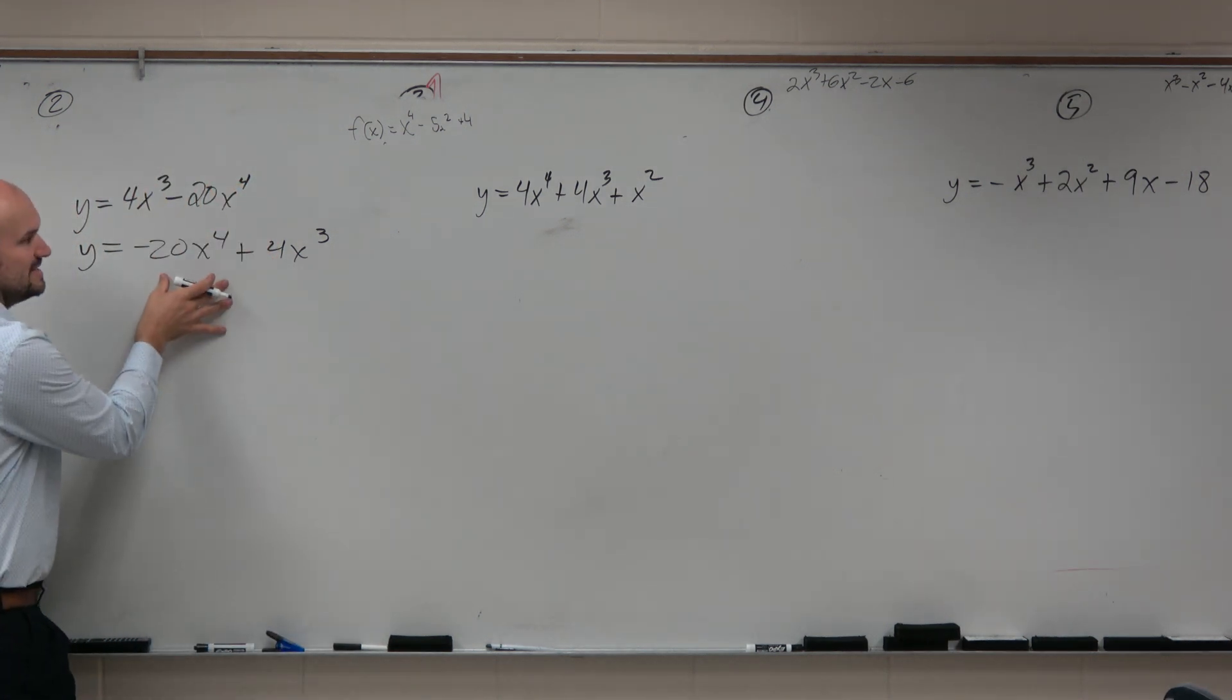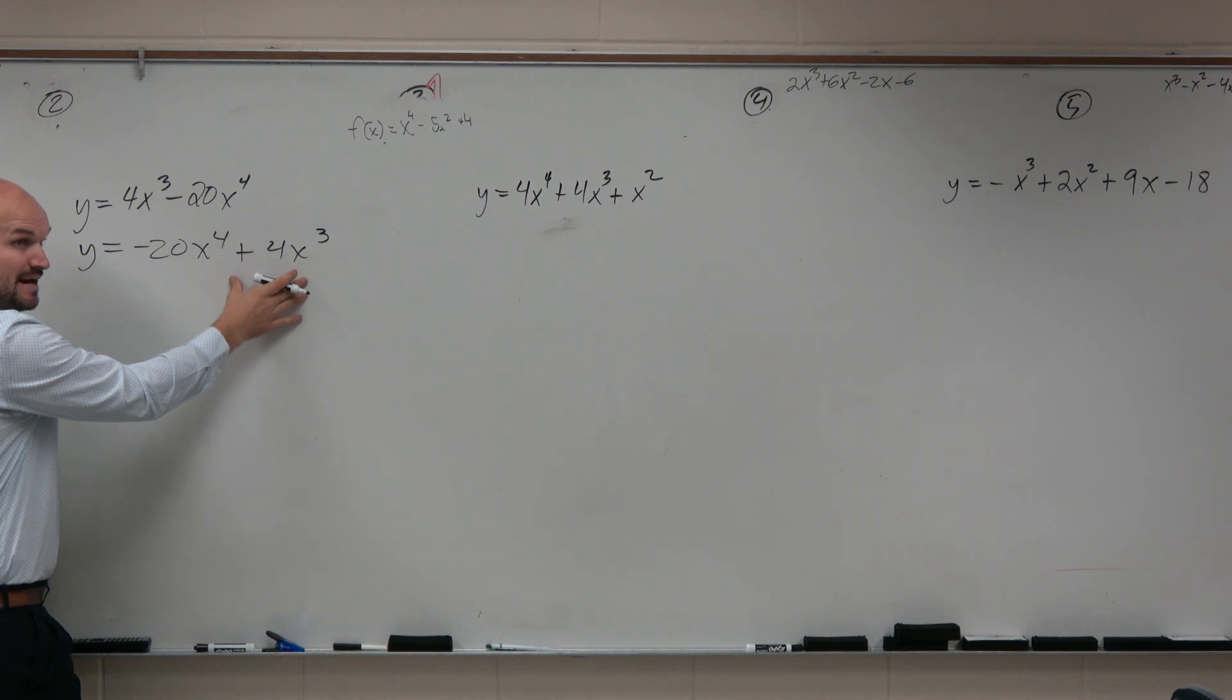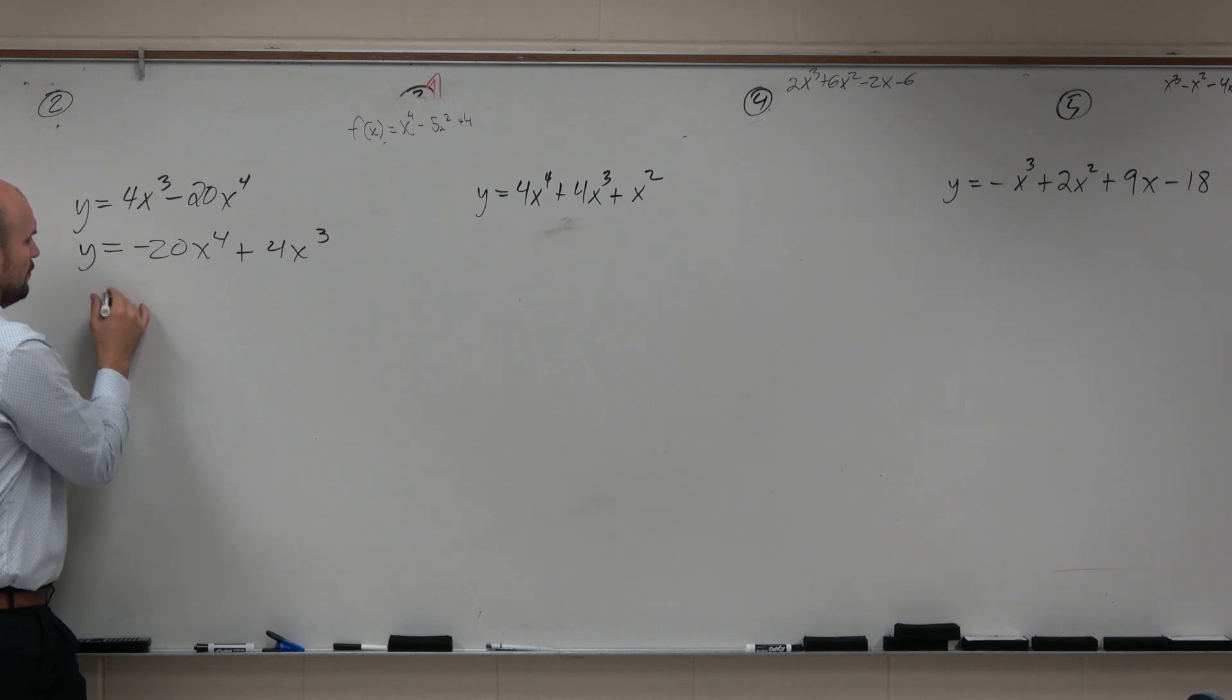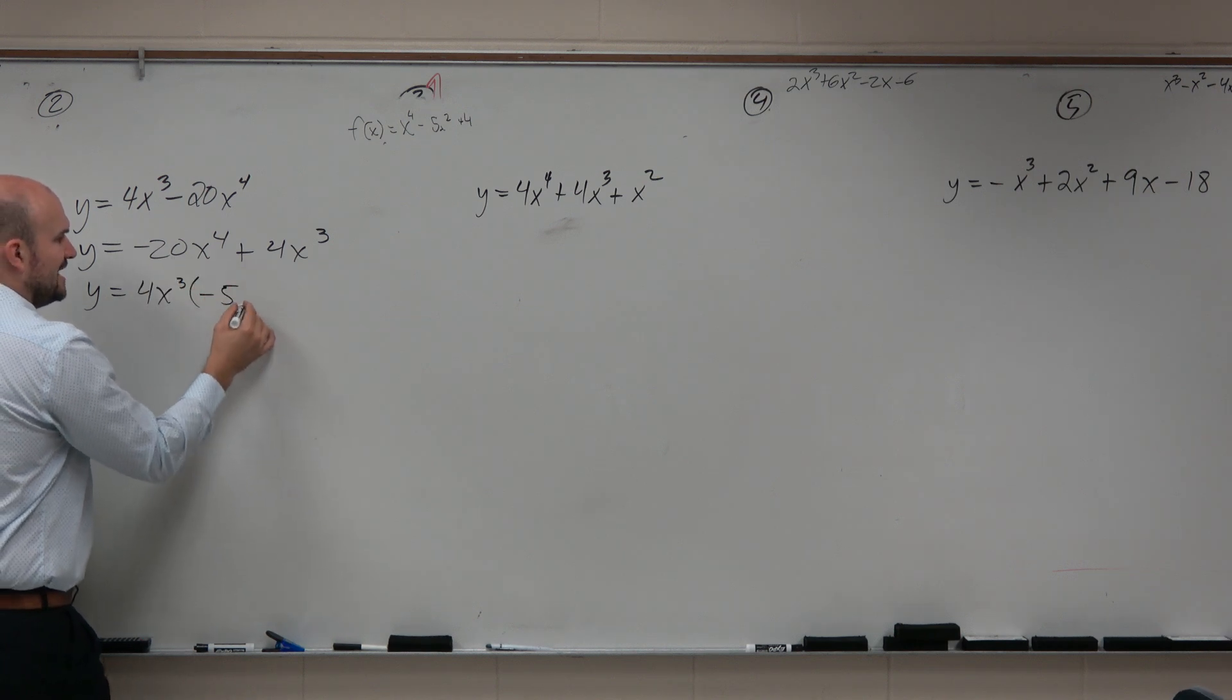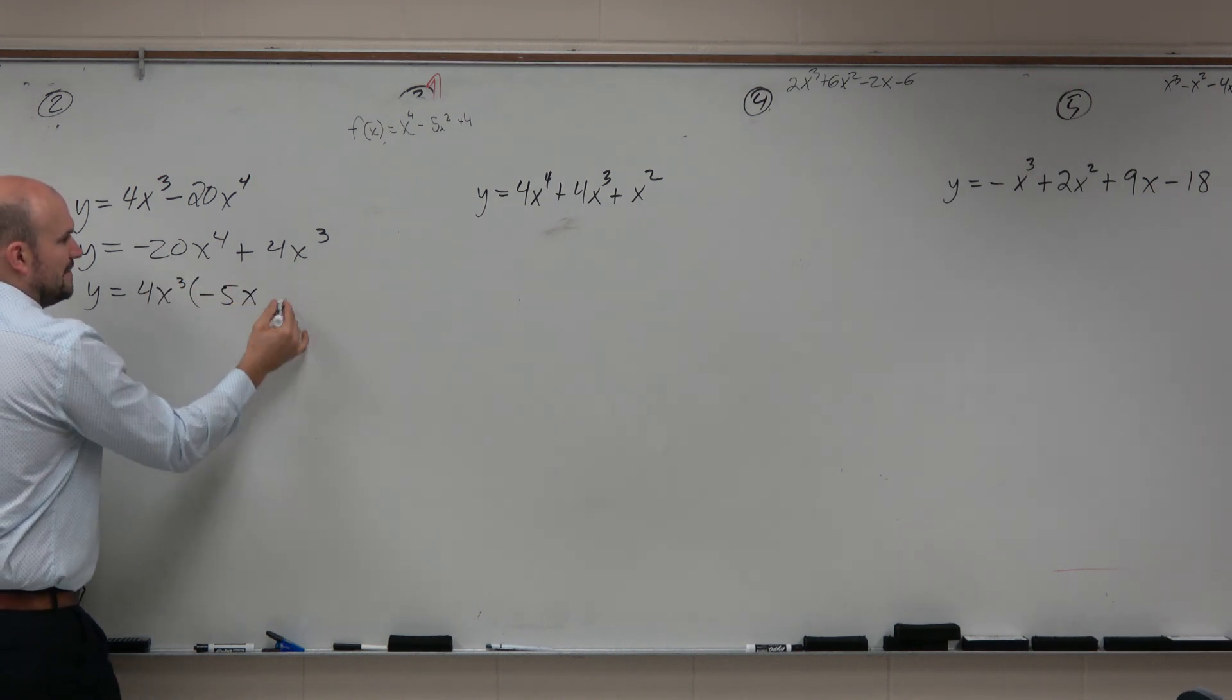But I think it's sometimes helpful to always have those high-end terms. Let's go and factor out. We see that they both have some x in common, x cubed, and it looks like 4 can be divided into both of them. So if I factor out a 4x³, this is going to give me a -5x, and that would be +1.